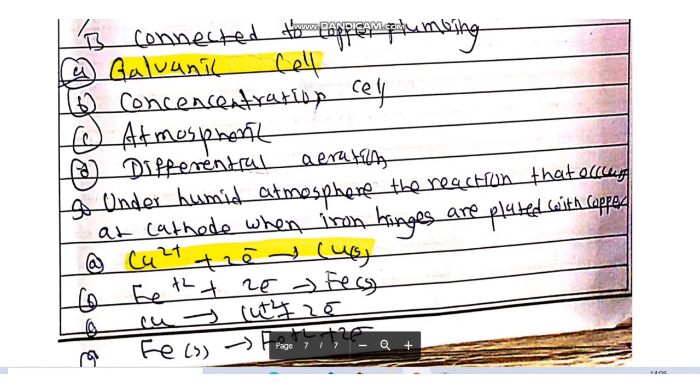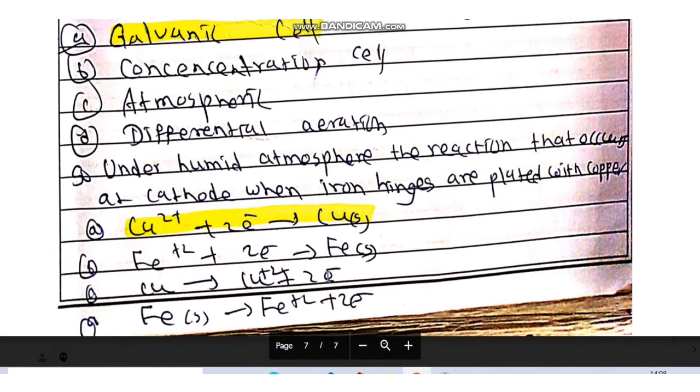That means when two dissimilar metals have come in contact with each other under humid conditions or humid atmosphere. The reaction that occurs at cathode when iron hinges are plated with copper is this reaction at copper electrode.